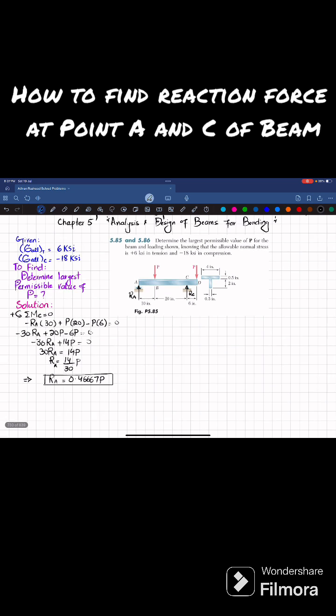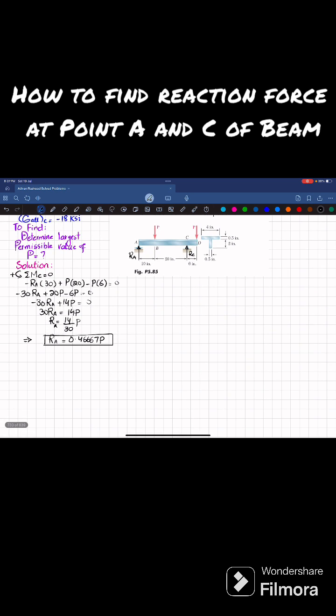Now we'll find Rc by using equation of equilibrium. The equation of equilibrium is that sum of all forces along y direction must be equal to 0. Upward force is taken as positive, so Ra which is upward is 0.46667 times P, minus this P and this P.